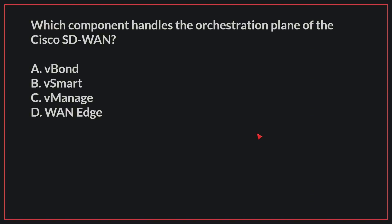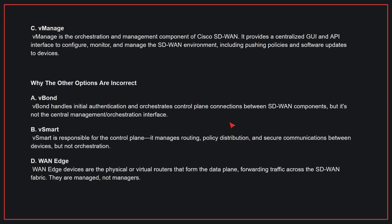Which component handles the orchestration plane of the Cisco SD-WAN? The correct answer is C. vManage is the orchestration and management component of Cisco SD-WAN. It provides a centralized GUI and API interface to configure, monitor, and manage the SD-WAN environment, including pushing policies and software updates to devices.